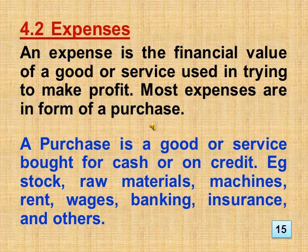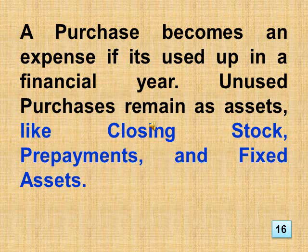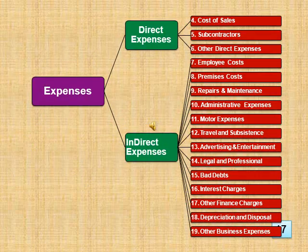Section 4.2 Expenses. An expense is the financial value of a good or service used in trying to make profit. Most expenses are in the form of a purchase — a good or service bought for cash or on credit. Examples are stock, raw materials, machines, rent, wages, banking, and insurance. A purchase becomes an expense if it's used up in a financial year. Unused purchases remain as assets, like closing stock, prepayments, and fixed assets. Expenses are classified into direct and indirect expenses.